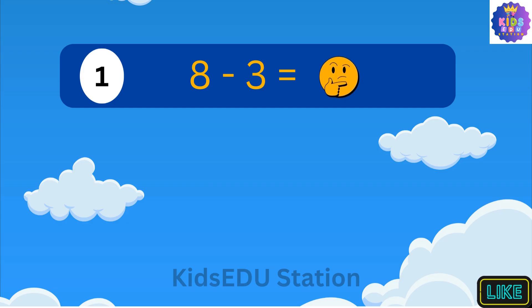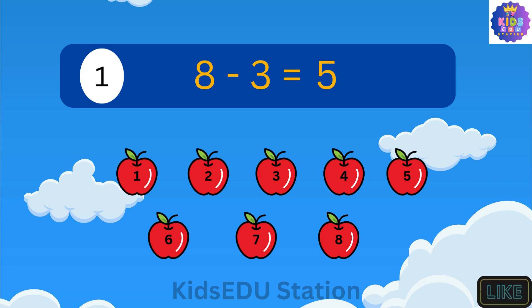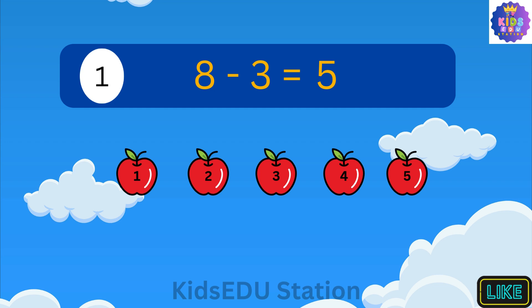What is 8 minus 3? 8 minus 3 is 5. Imagine you have 8 apples. You ate 3 of them. Now you have 1, 2, 3, 4, 5 apples left.